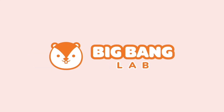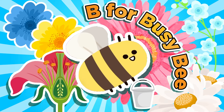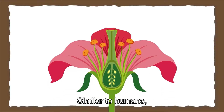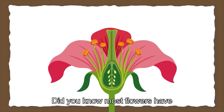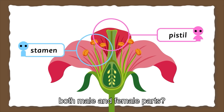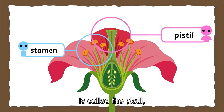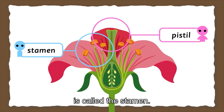Big Bang Lab! Similar to humans, flowers have reproductive parts. Did you know most flowers have both male and female parts? The female part is called the pistil, and the male part is called the stamen.